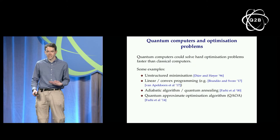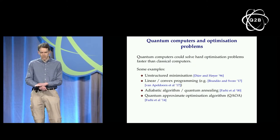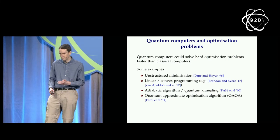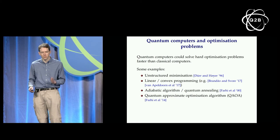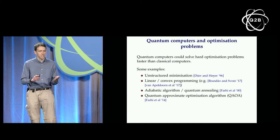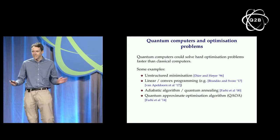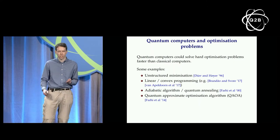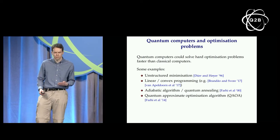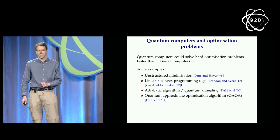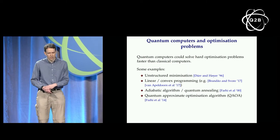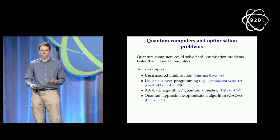There are a few examples we know about. A result going back to the 90s by Durr and Hoyer is for solving completely unstructured minimization problems — finding the minimum item in a set of size N with no information about the set's structure. Classically this takes time about N, but with a quantum computer you can find the minimum in time about square root of N, similarly to Grover's algorithm.